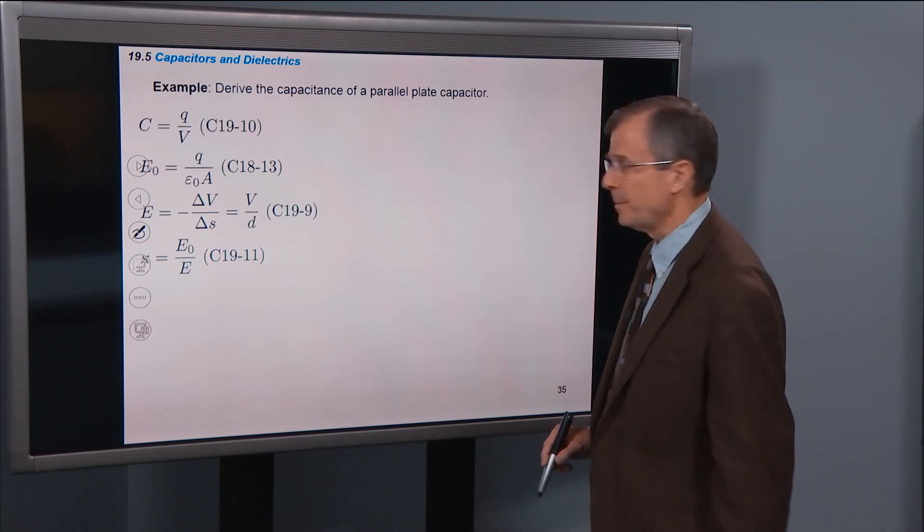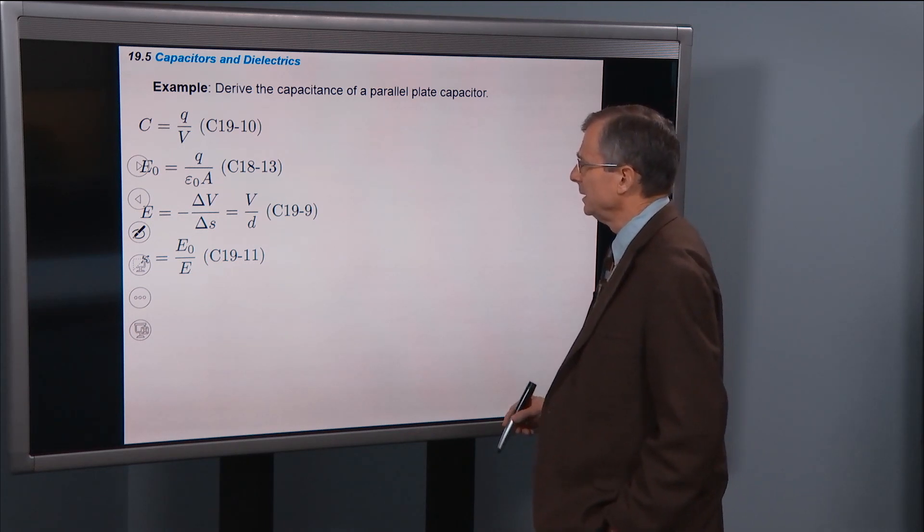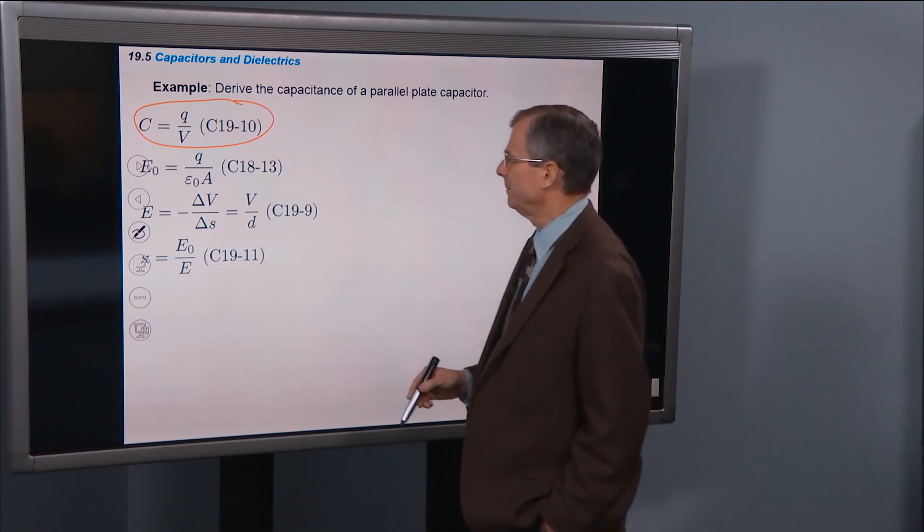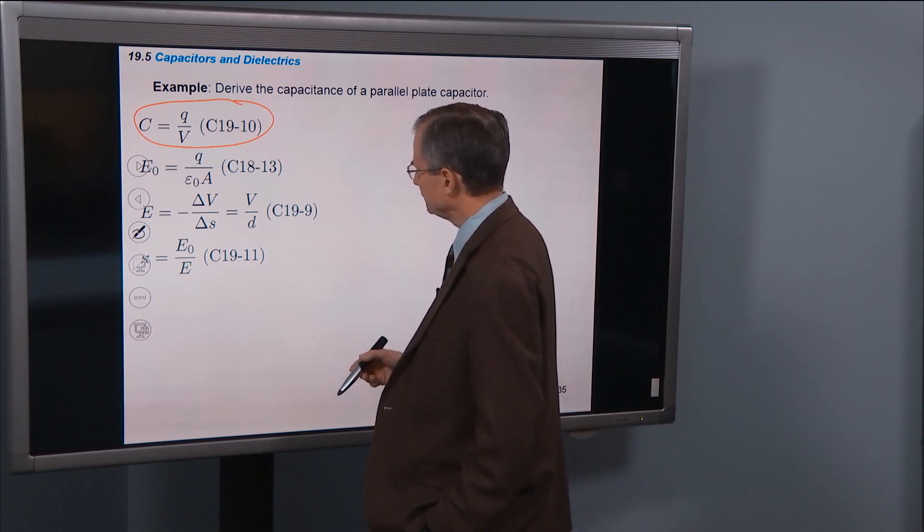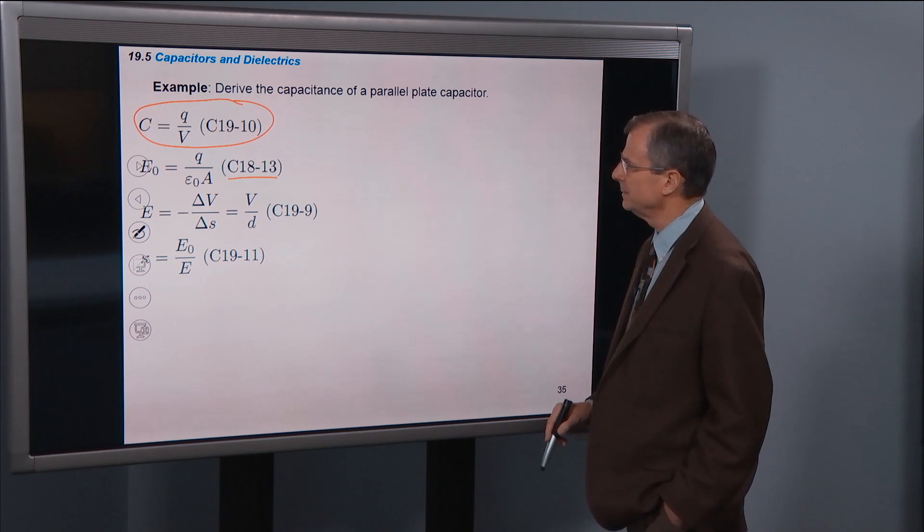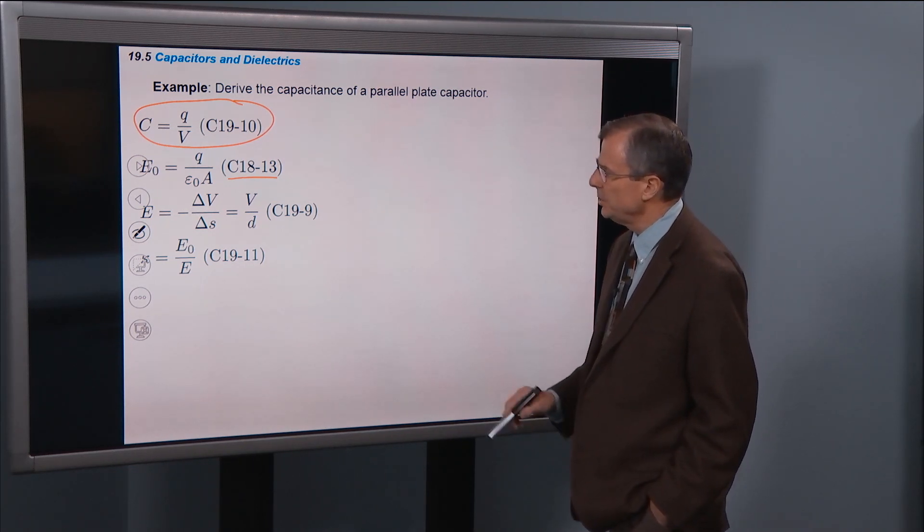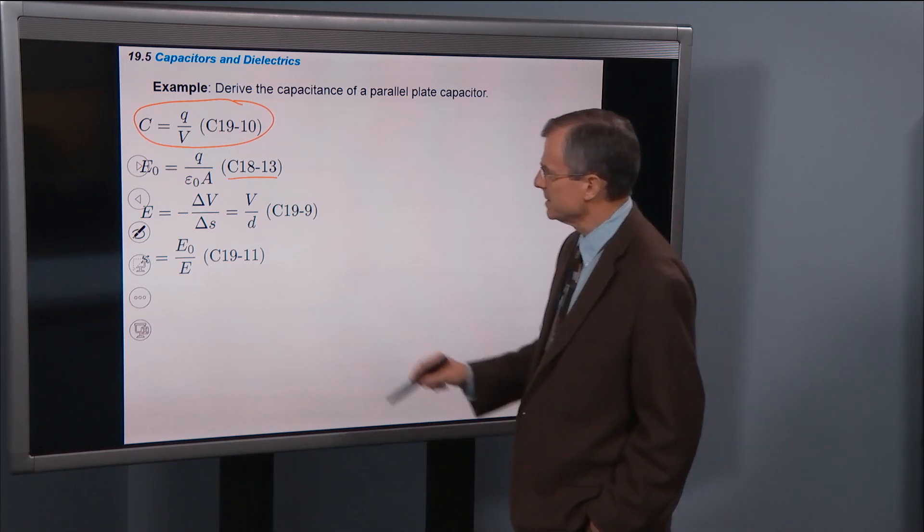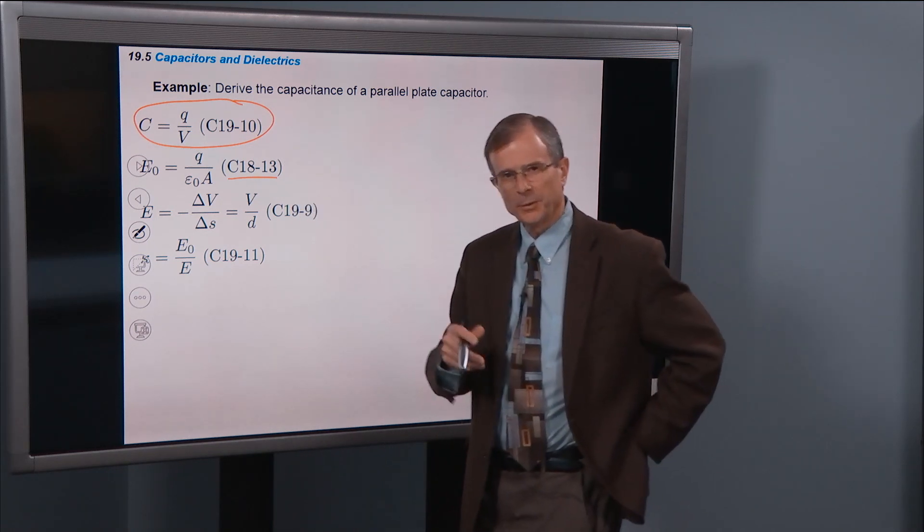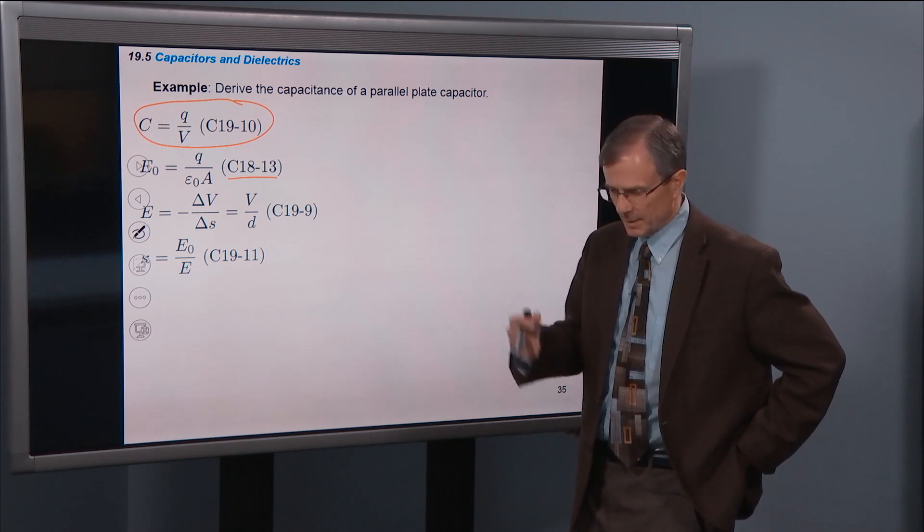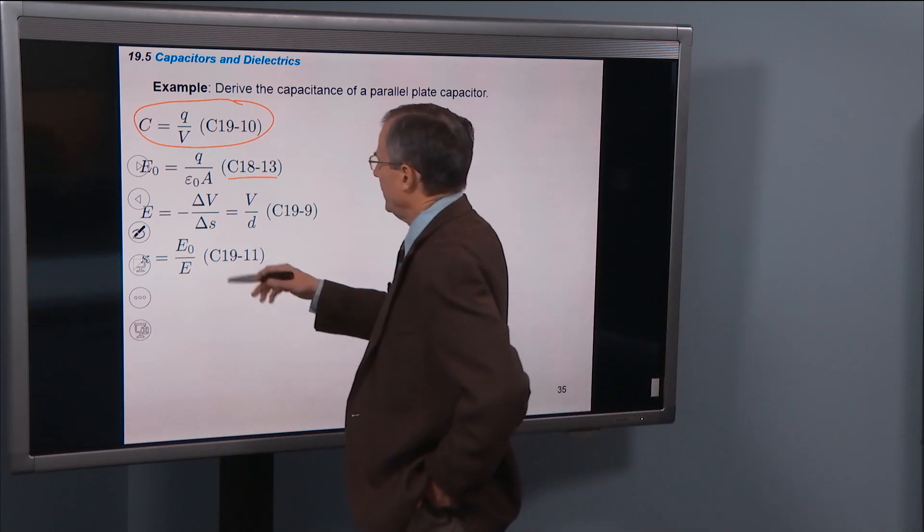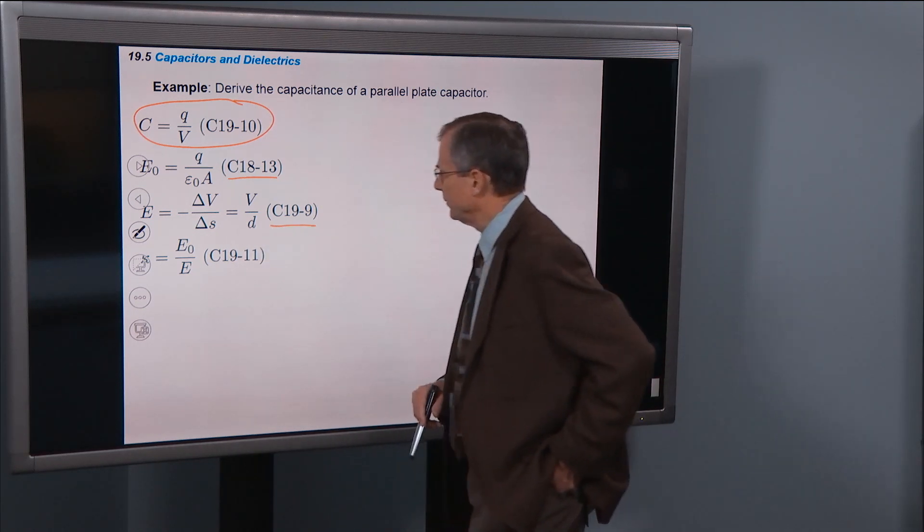Here's the derivation of the capacitance of that parallel plate capacitor. Here's the definition. We just defined that concept. C is Q over V. ε0 is the concept we covered in chapter 18. Q over ε0. That's σ divided by ε0. And we talked about this particular concept, the electric field near a surface, near a plate with charge Q and area A.